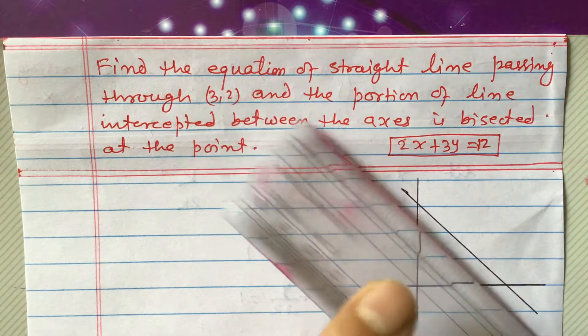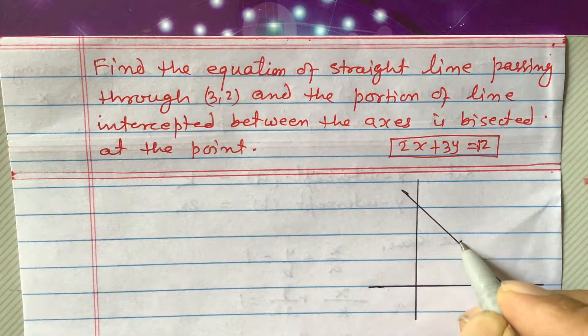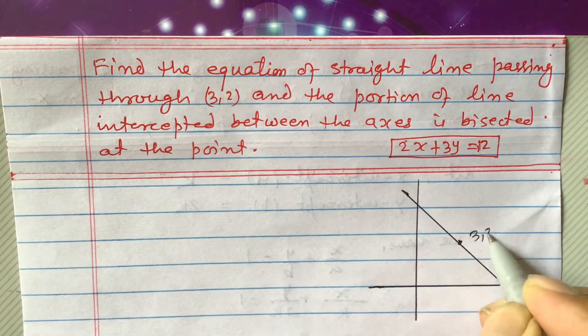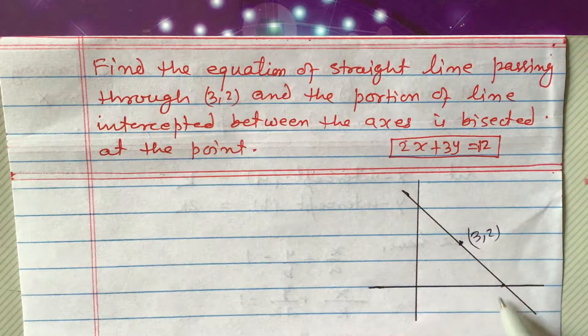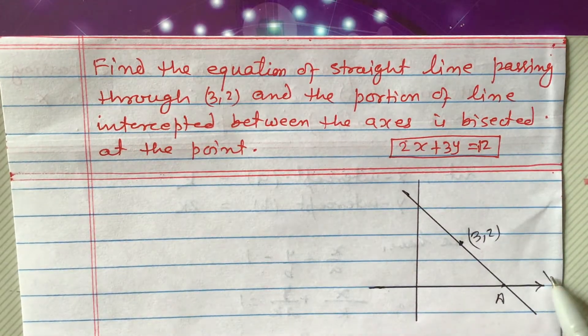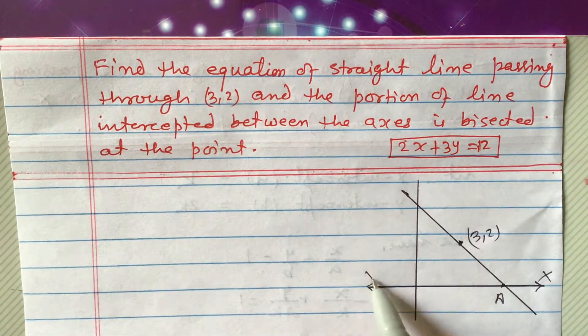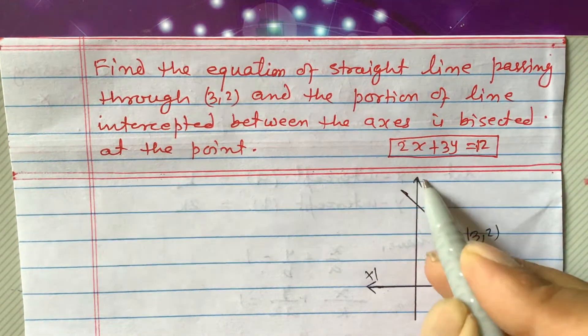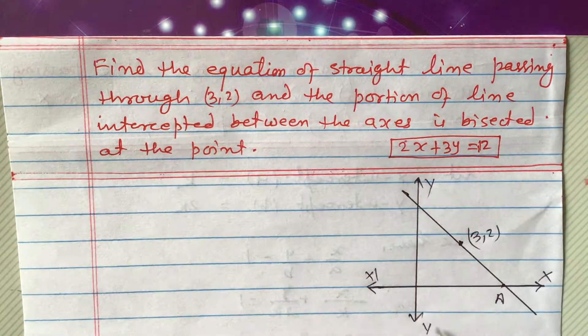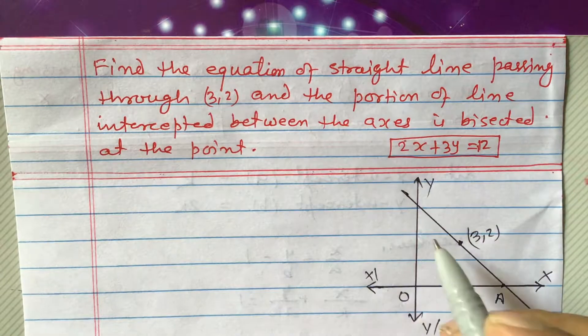So, we have to find the equation of this line which passes through the point 3, 2. This is 3, 2 is the point. Let us say this is a and this is x axis. x, x dash, y axis, y dash, we can write. x, y dash, this is origin.